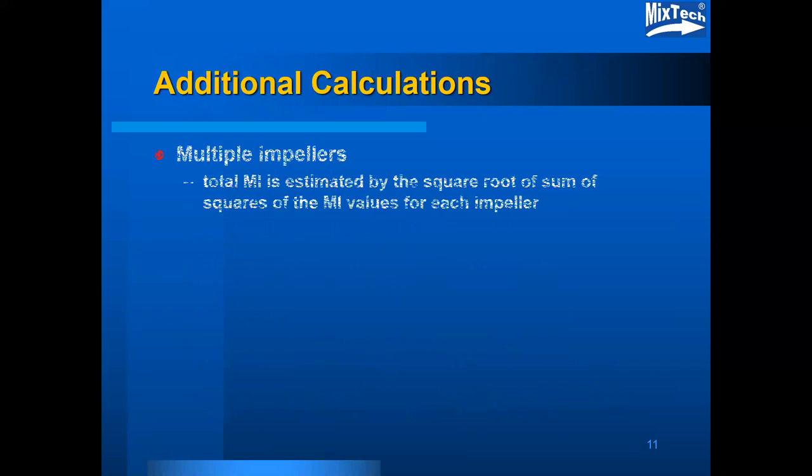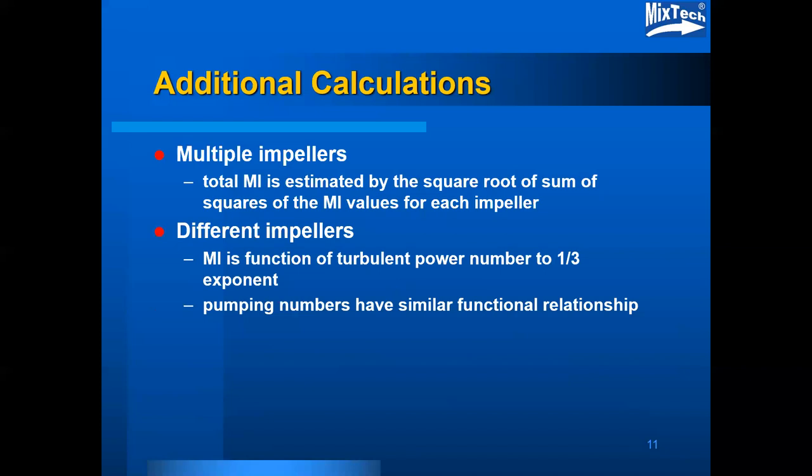Some additional calculations: for multiple impellers, the total mixing index is estimated by the square root of the sum of squares of the mixing index values for each impeller. For different impellers, the mixing index is a function of the turbulent power number to the one-third power. That type of behavior is also characteristic of what happens with pumping numbers relative to available pumping capacities.